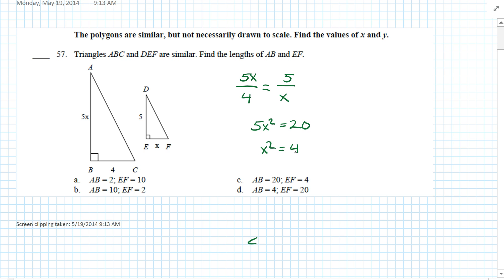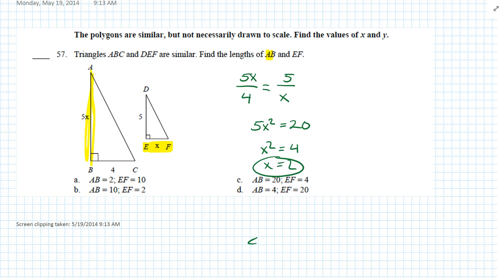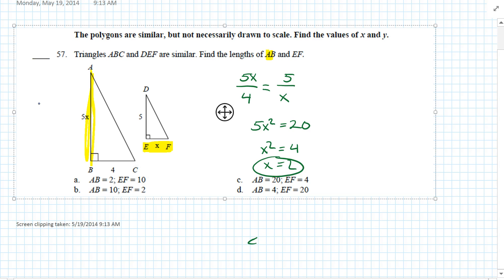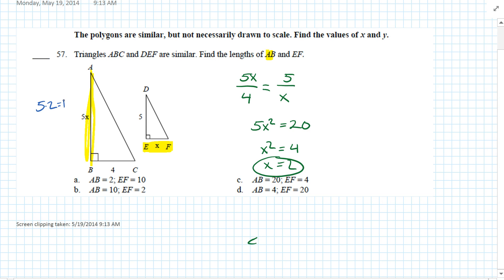We get x squared equals 4. Take the square root of each side, so x equals 2. The question asked for the length of AB and EF. Since x equals 2, AB is 5 times 2, which is 10, and EF is 2. So AB is 10, EF is 2. Our answer is B.